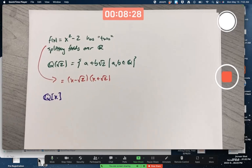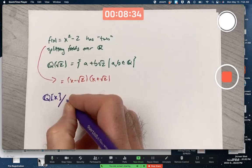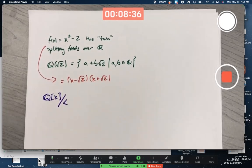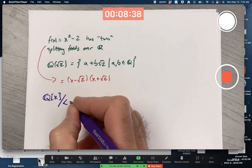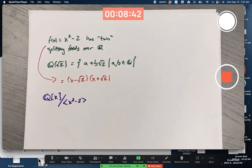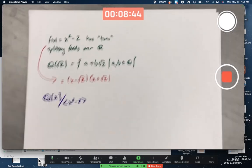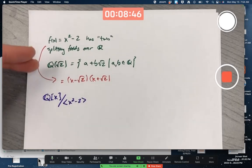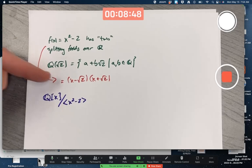Take the polynomial ring, elements are polynomials with coefficients in the rationals, and form the factor ring by modding by the principal ideal generated by x² - 2. x² - 2 is irreducible over Q.